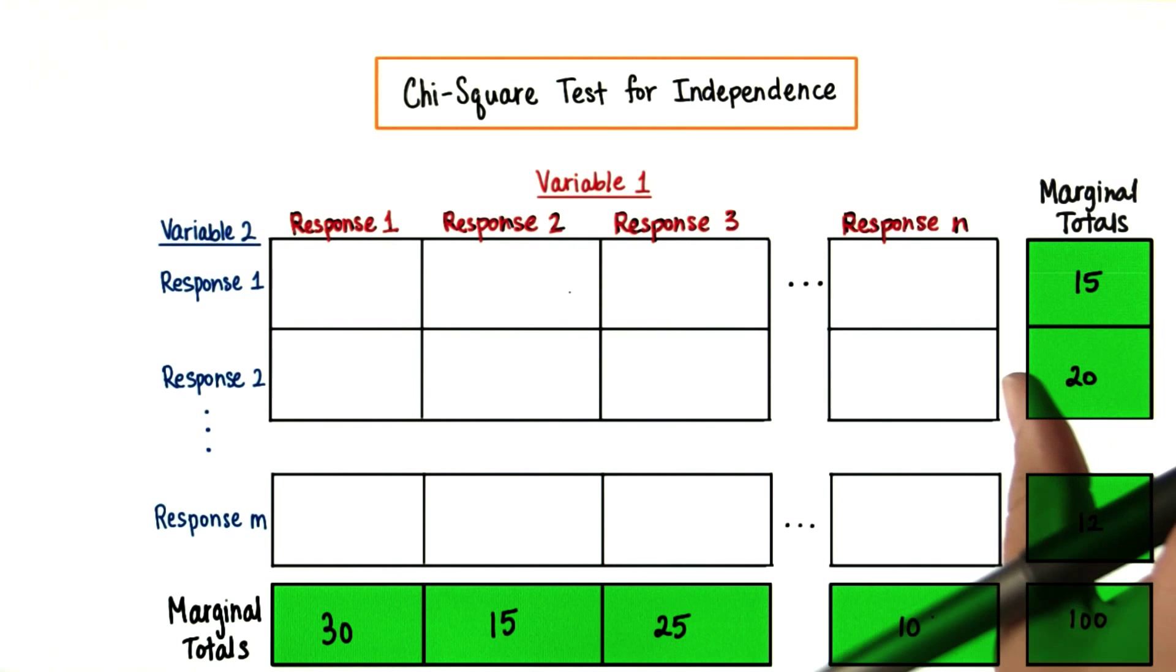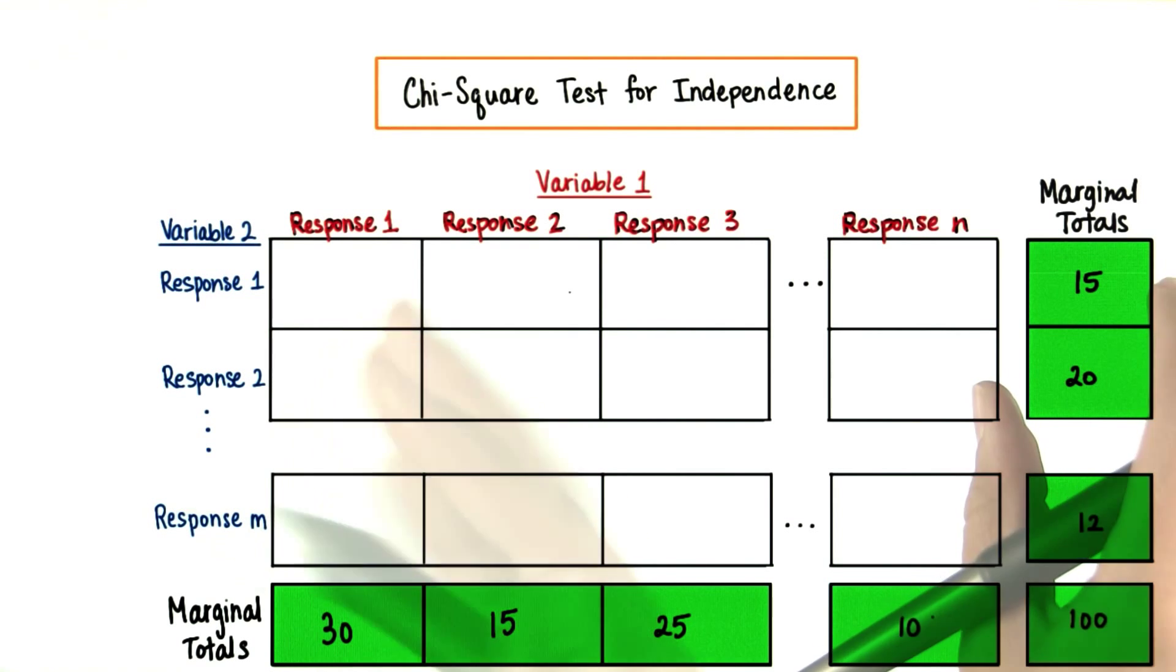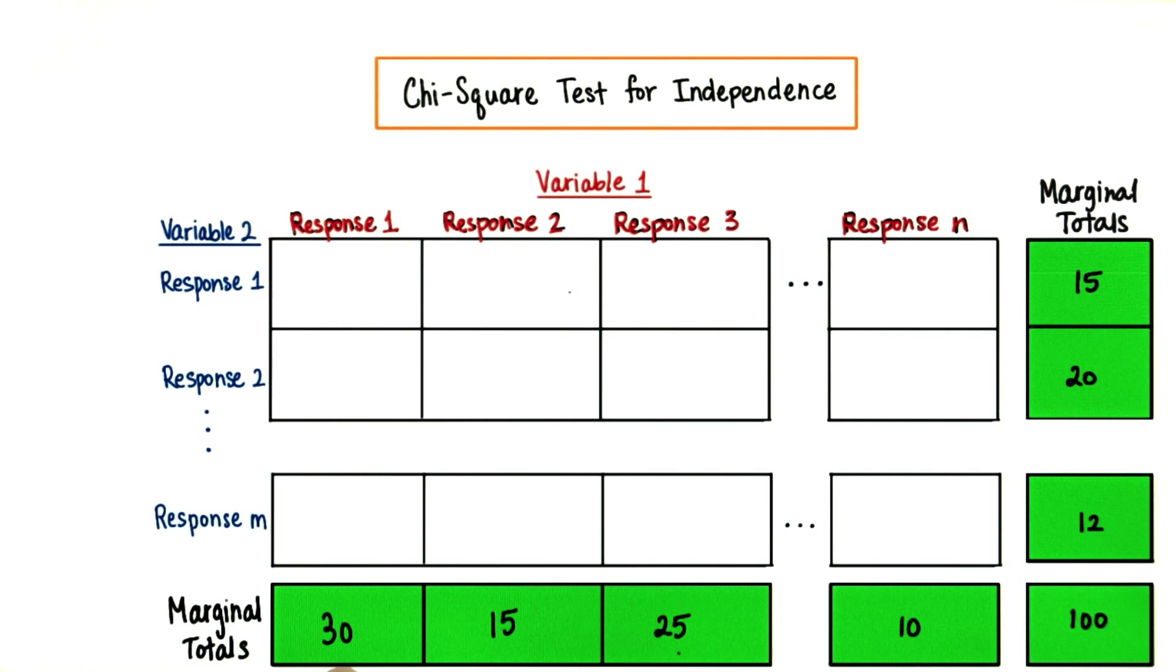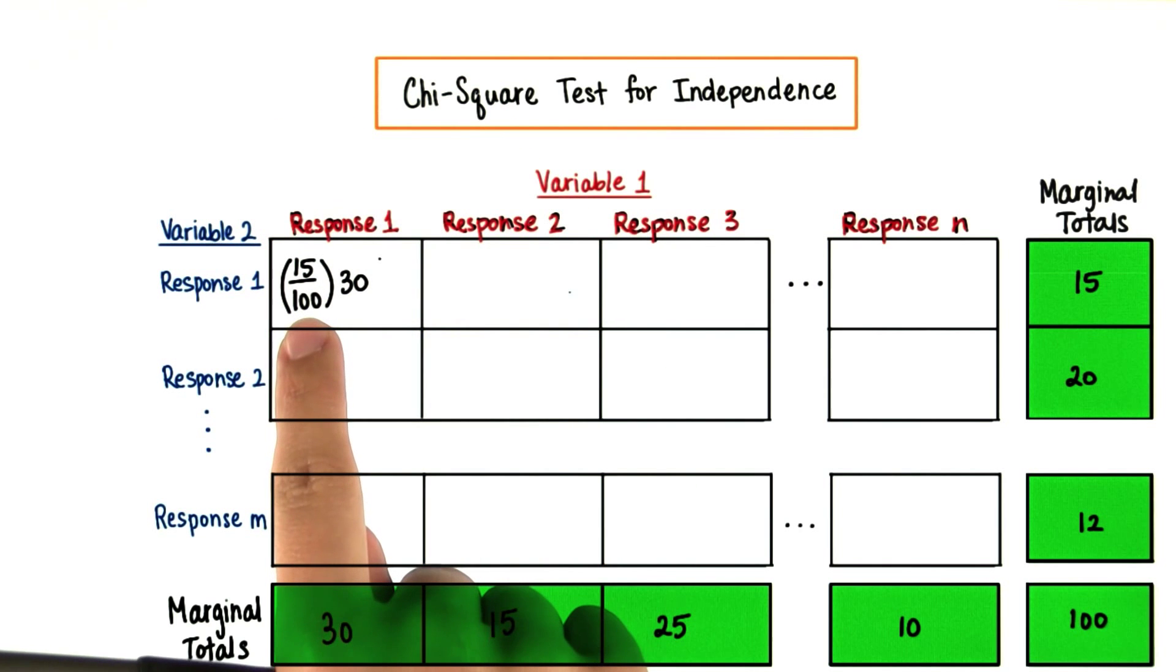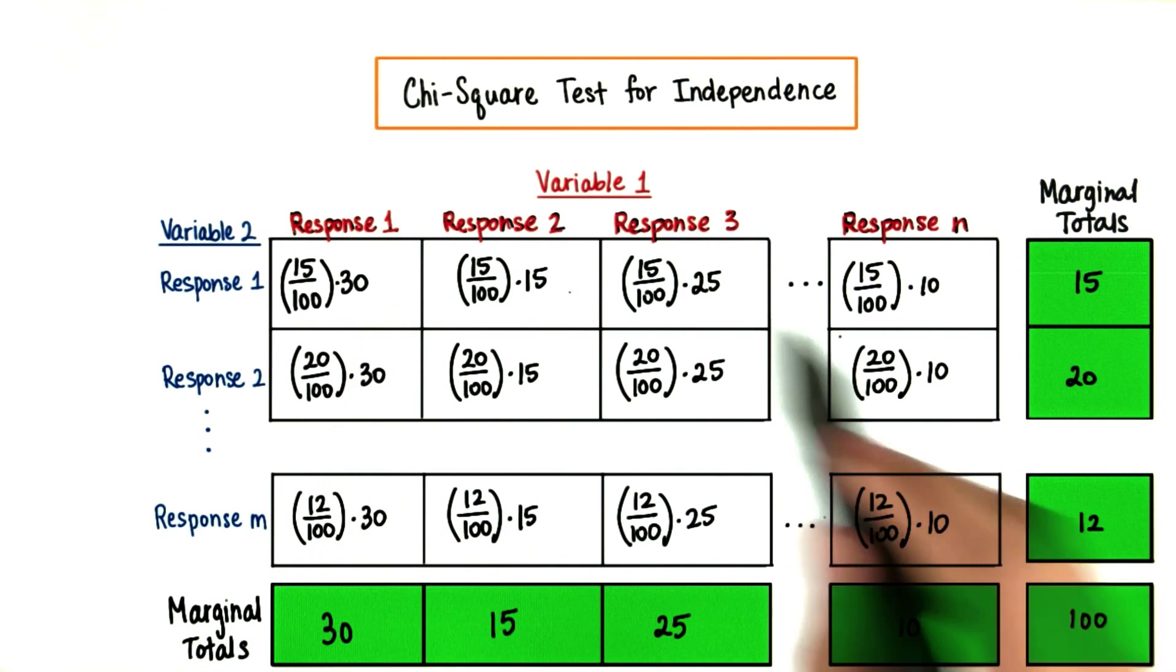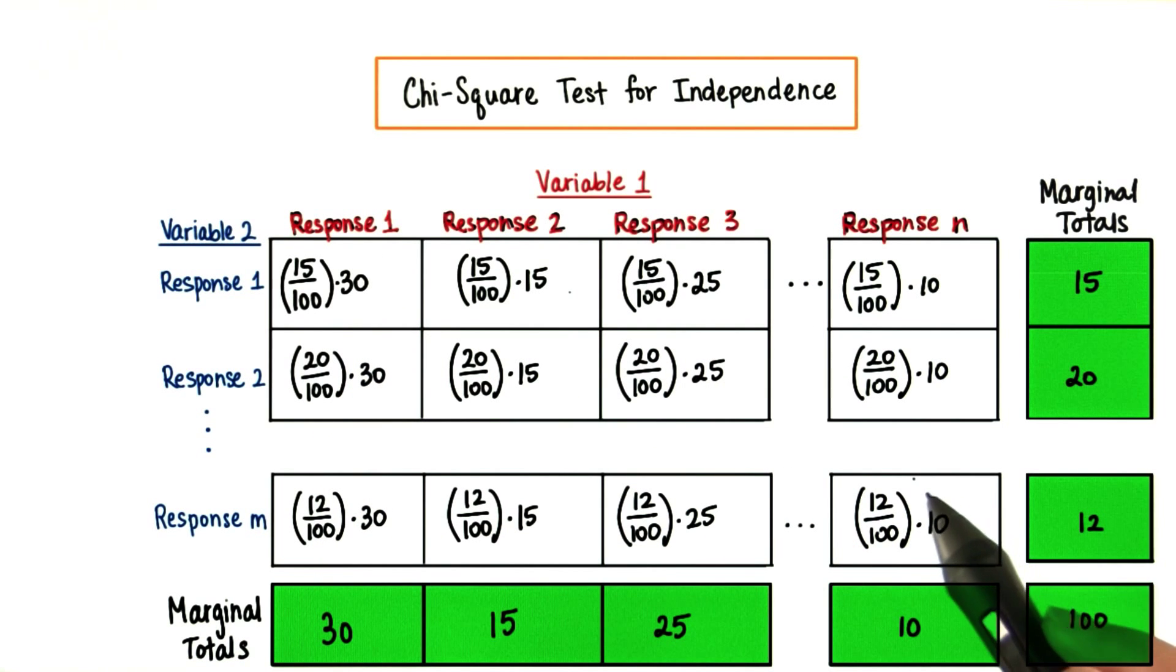Therefore, we would expect that same proportion to have response 1, variable 1. If there were 30 total in response 1, variable 1, then we would expect 15 out of 100 times 30 for this cell. And here's what we would expect for the other cells.